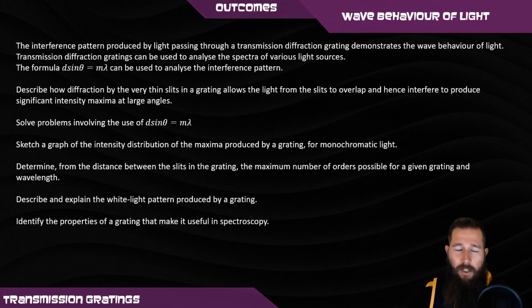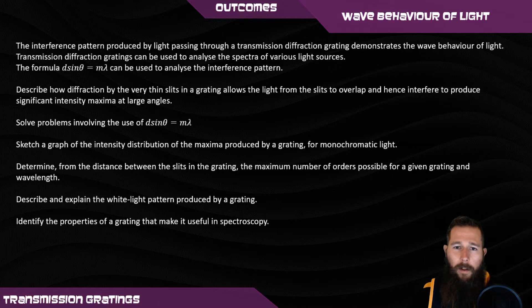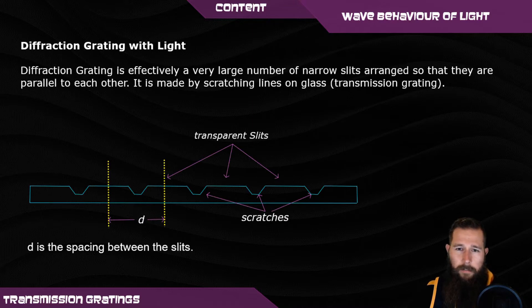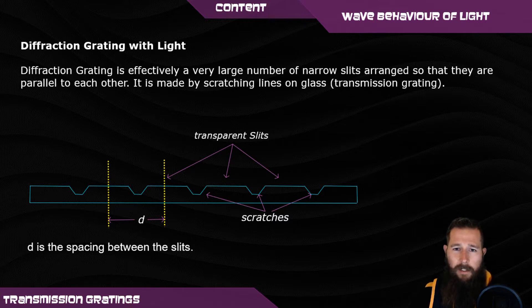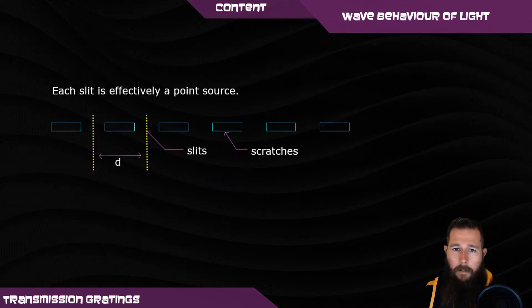In this video we'll be looking at transmission gratings, intensity of light in various cases, white light when it moves through a transmission grating, and also a little bit on spectroscopy. A diffraction grating is effectively a large number of slits that are right next to each other, equally spaced. It's usually created by putting scratches in a material, and when light passes through a diffraction grating it diffracts and behaves as a wave. The effect of this is that each slit acts as a light source.